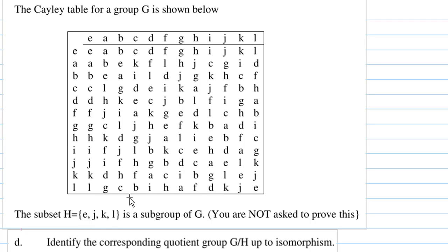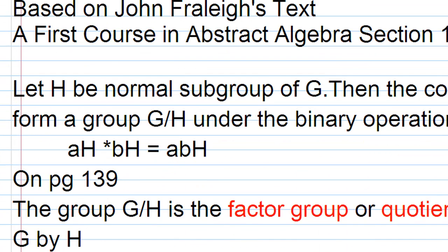Now, we have done in the earlier part that this H here is a normal subgroup of G. We are going to identify the corresponding quotient group G by H up to isomorphism. First of all, let's look at some background info first.